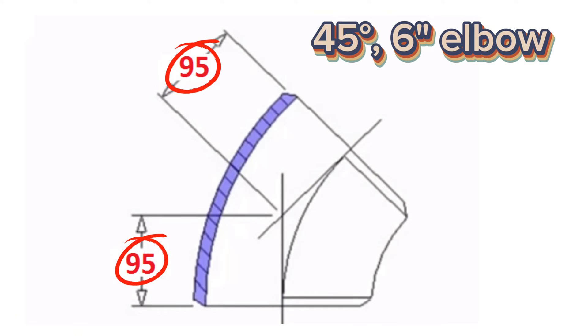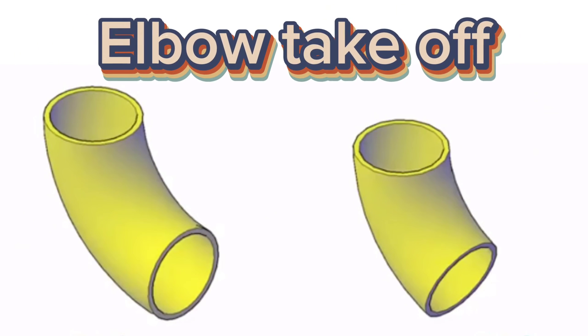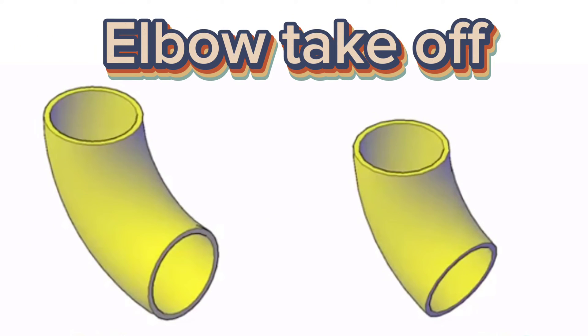Using this formula you can calculate and find the center to end dimension of any degrees. Normally custom elbow angles from 45 degree to 90 are cut from 90 degree standard elbow. But for custom elbow angles smaller than 45 degree, elbow is normally cut from existing standard 45 degree elbow. Then we can use above formula to get elbow angle for custom degrees.